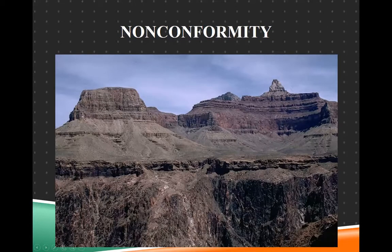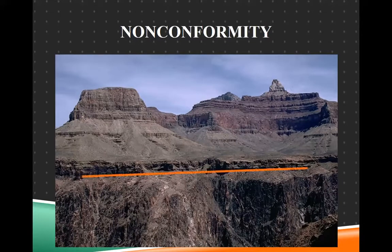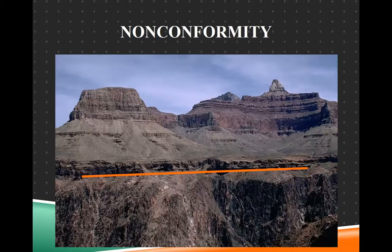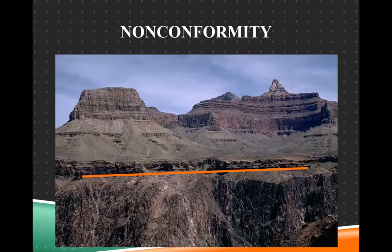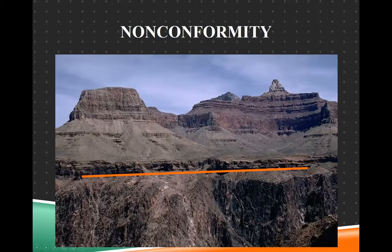Here's an example of a nonconformity from the Grand Canyon — probably the most famous example. Below the orange line is crystalline rock, including the Zoroaster Granite and other metamorphic rock that makes up the base of the Grand Canyon. Above it is all sedimentary rock. So this contact is between sedimentary rock sitting on igneous or crystalline bedrock.